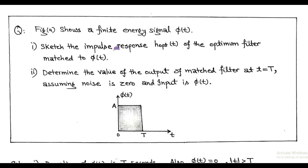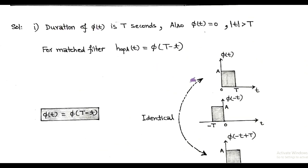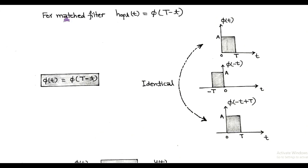The energy signal φ(t) is given with some finite energy. In the first part, we have to find the optimum impulse response matched to φ(t). The duration of φ(t) is capital T seconds, and outside this interval the value of φ(t) is zero. For the matched filter, the optimum impulse response is equal to φ(T − t), which is the time-reversed and delayed version of the input signal φ(t).